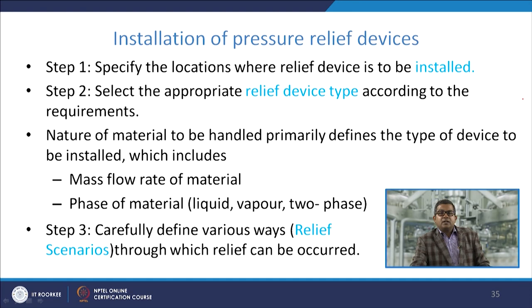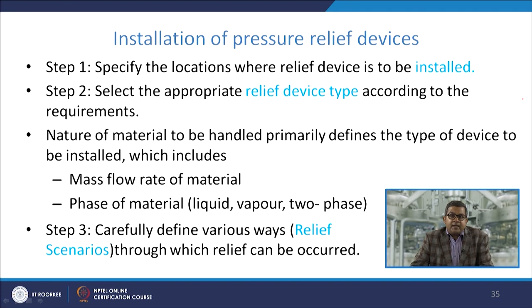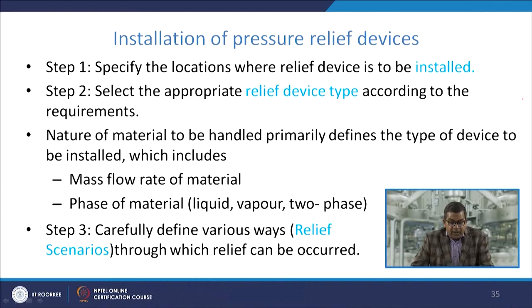To install pressure relief devices: Step one — specify the location where the relief device is to be installed, as an improper location produces extremely dangerous outcomes. Step two — select the appropriate relief device type according to requirement. The nature of the material to be handled — mass flow rate, phase, and material characteristics — primarily defines the type of device, since a reactive material may cause choking or fouling of the device.